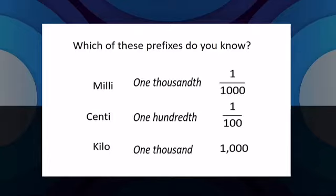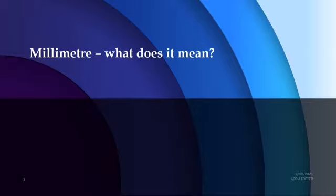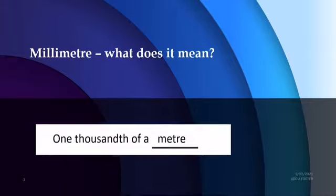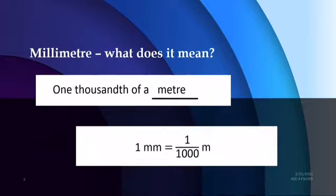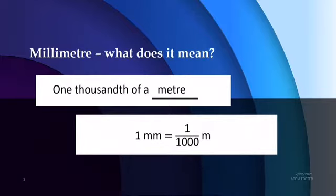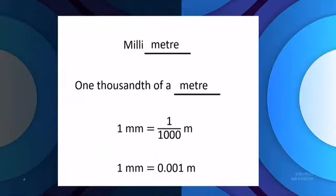So with that in mind, what do you think millimetre means? If milli means one thousandths, a millimetre is one thousandth of a metre — which is the same as saying that a millimetre is one over one thousand metres, which is the same as saying that a millimetre is 0.001 metres.